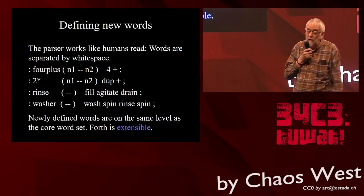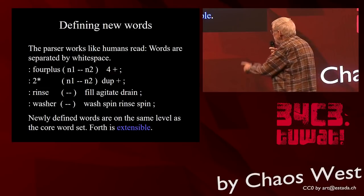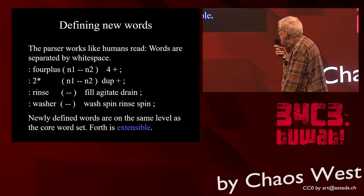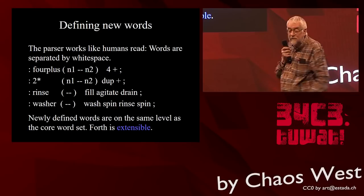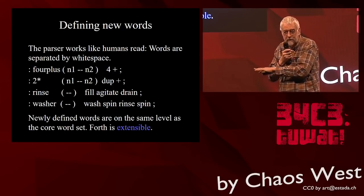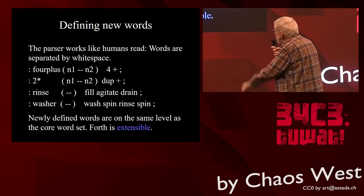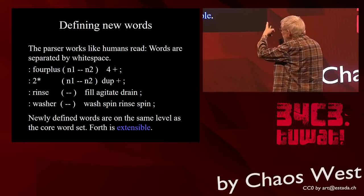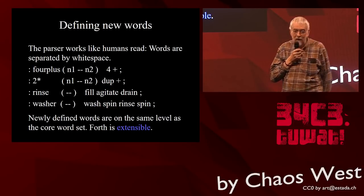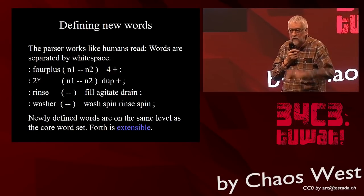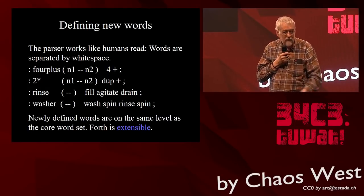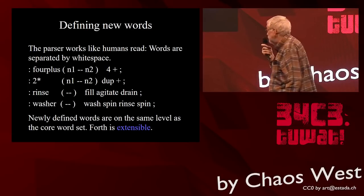Defining new words: the basic operator is the colon. After the colon comes the name of the new word you are defining, then usually a stack comment — what do I need before the word starts, and what is the stack situation when the word has finished. You could define a word 4PLUS that just does a 4 plus. But of course you can do nasty things: you could define colon 2 as 4 semicolon, and all of a sudden if you type 2, there would be a 4 on the stack. So that is something you should not do — but it's possible.